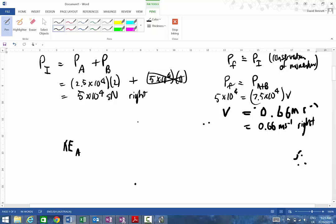So kinetic energy before is simply just going to be that of A. So that's going to be half mv squared, which is 2.5 by 10 to the 4 times 2 squared. And the kinetic energy after is going to be half mv squared, which is 7.5 by 10 to the 4 times the velocity, which is 2/3 squared.